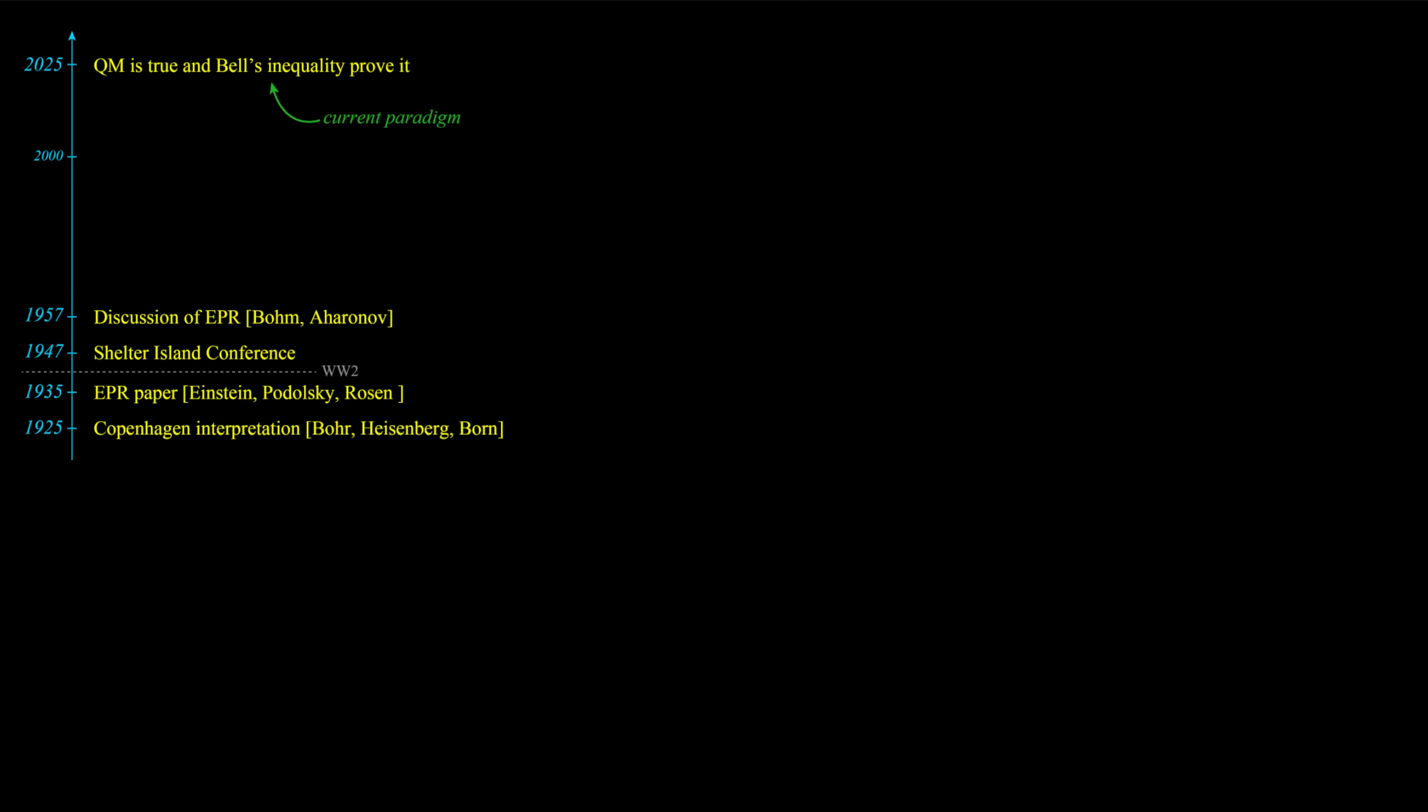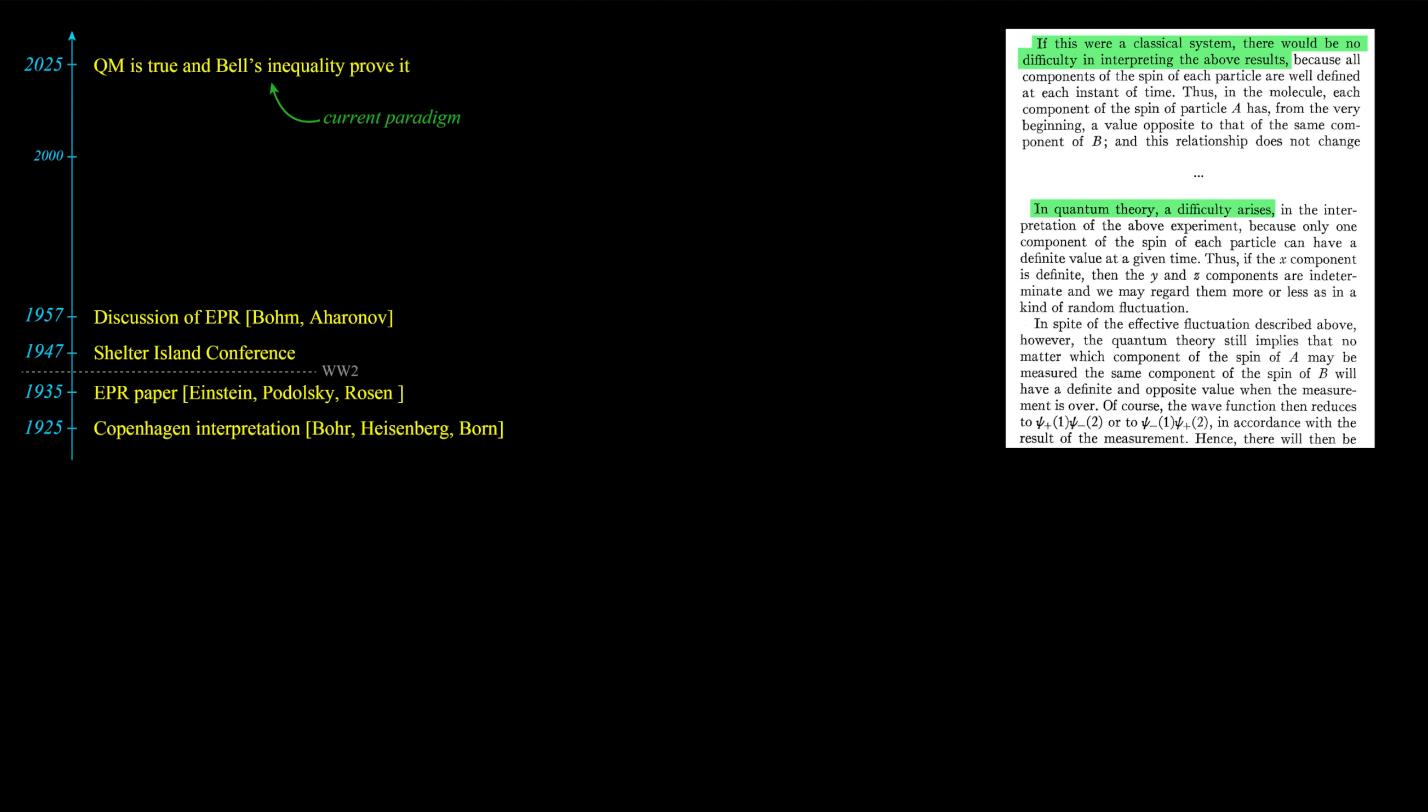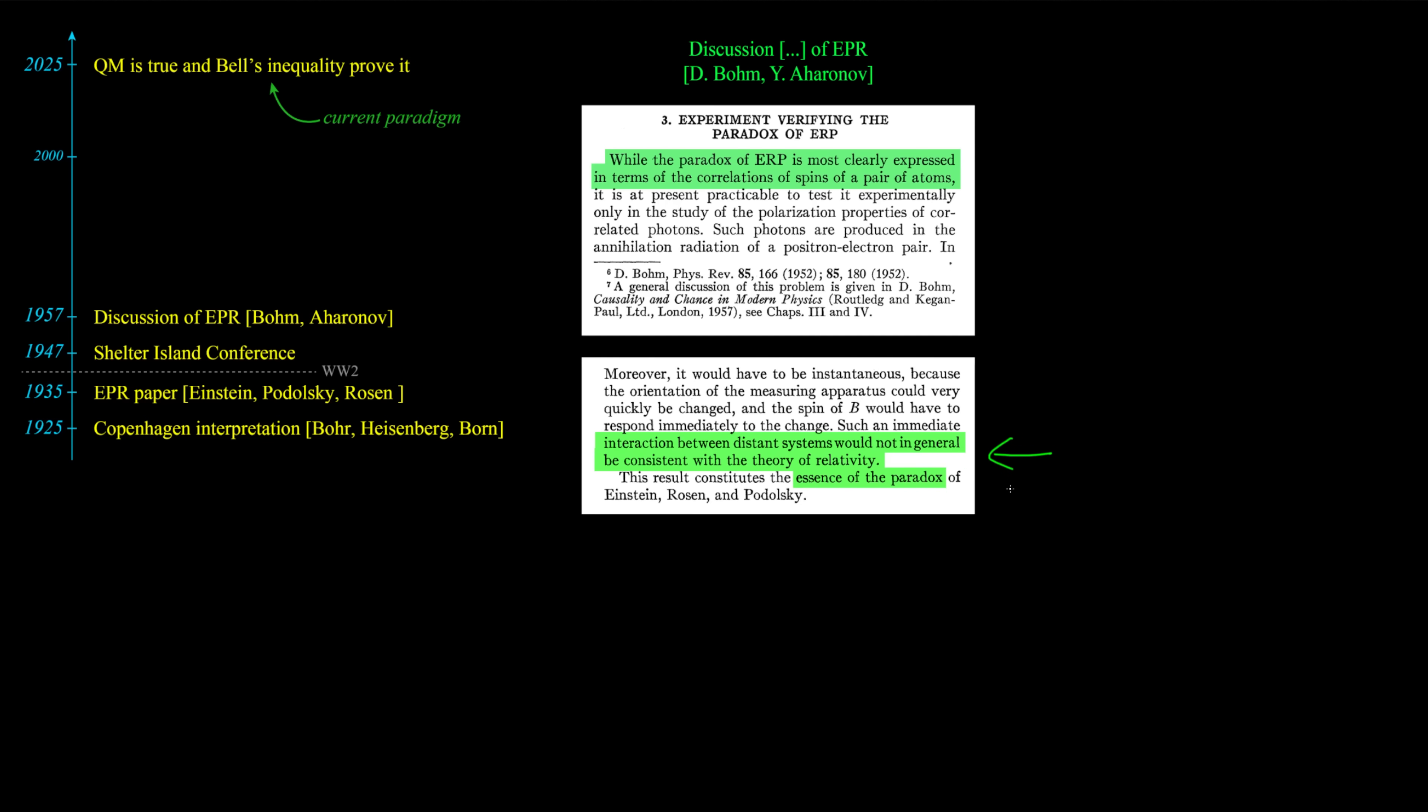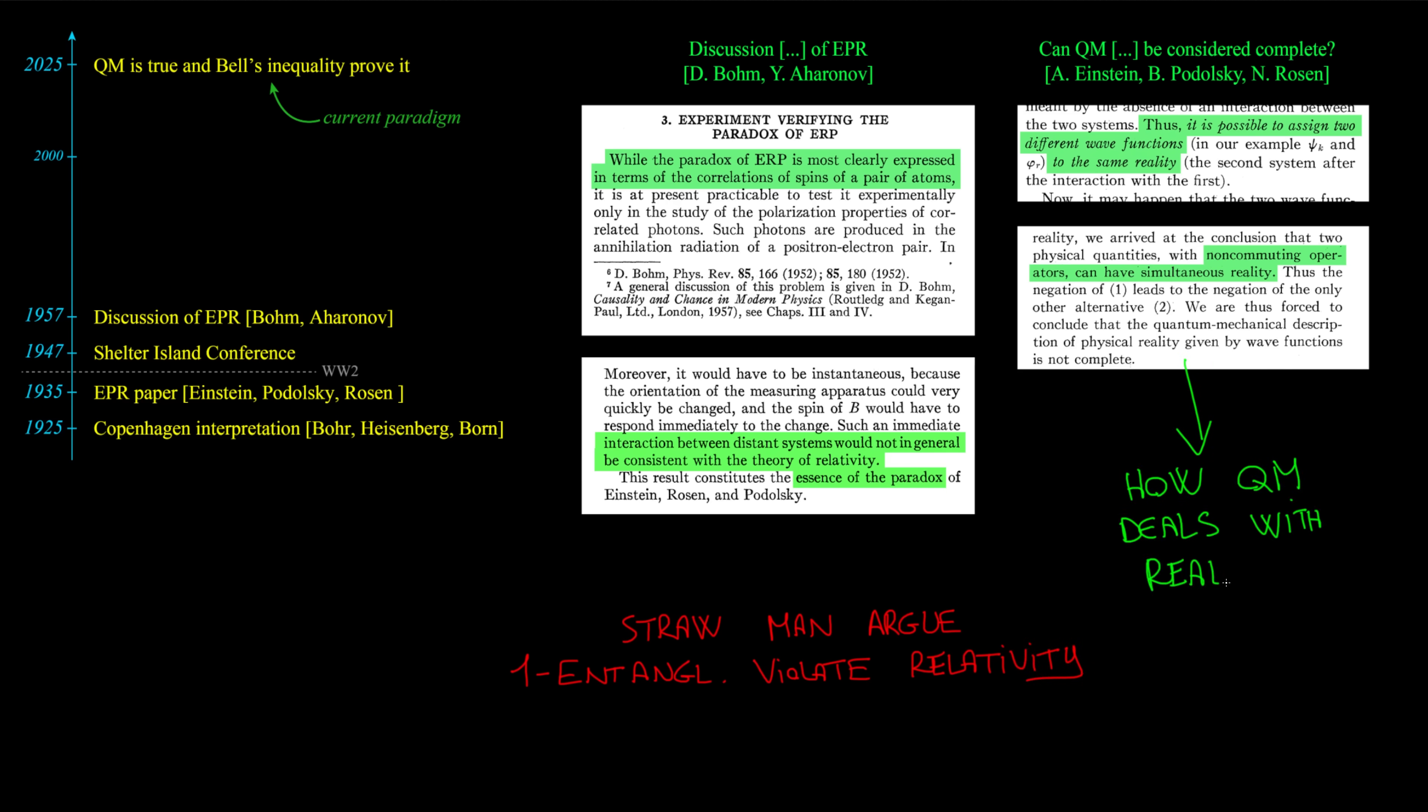In 1957 Aronov and Bohm published a discussion about the EPR paper. They start considering one molecule with integer spin made out of two atoms with spin 1/2, but they claim that experimental capabilities were limited. Anyway, they are focusing on violation of locality and correlation of spin, but we saw this is not what EPR paper is about. Indeed, here is where the straw man argument starts growing. Entanglement violating locality is definitely a problem, but EPR are questioning how quantum mechanics deals with reality.